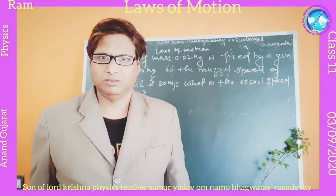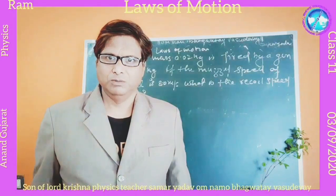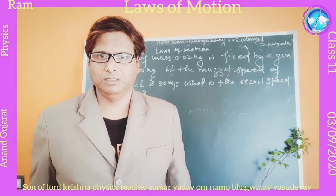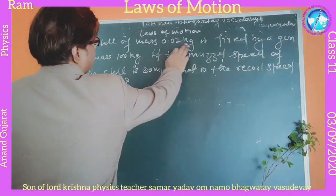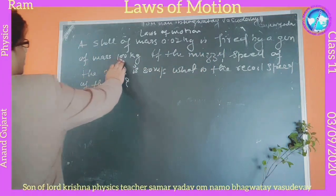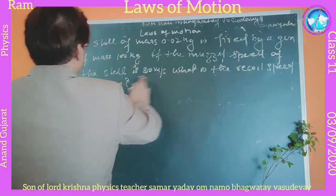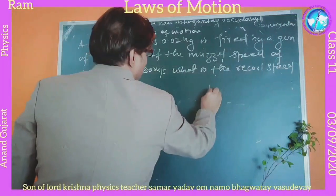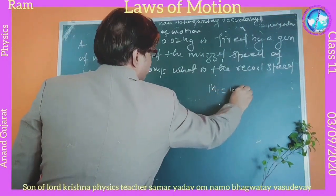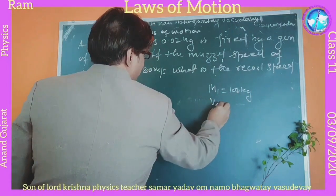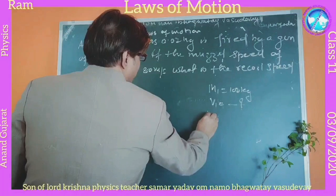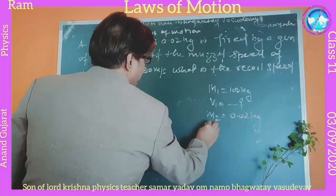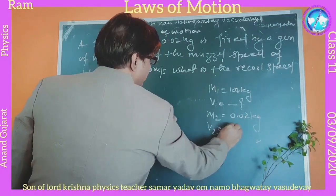Here is a problem involving linear momentum. A shell of mass 0.02 kg is fired from a gun of mass 100 kg. If the velocity of the shell is 80 meters per second, what is the recoil speed of the gun? Given: mass of the gun M1 is equal to 100 kg, mass of the shell M2 is equal to 0.02 kg, and velocity of the shell V2 is equal to 80 meters per second.